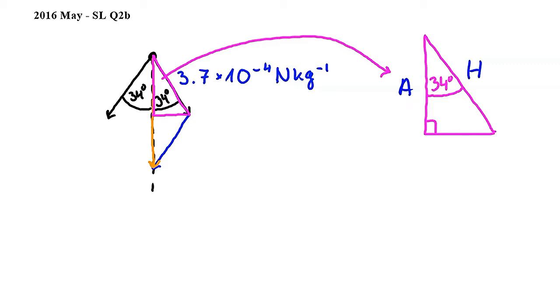Since we are working with the adjacent and the hypotenuse, we can use the cosine ratio. Cosine 34 degrees equals adjacent over hypotenuse.